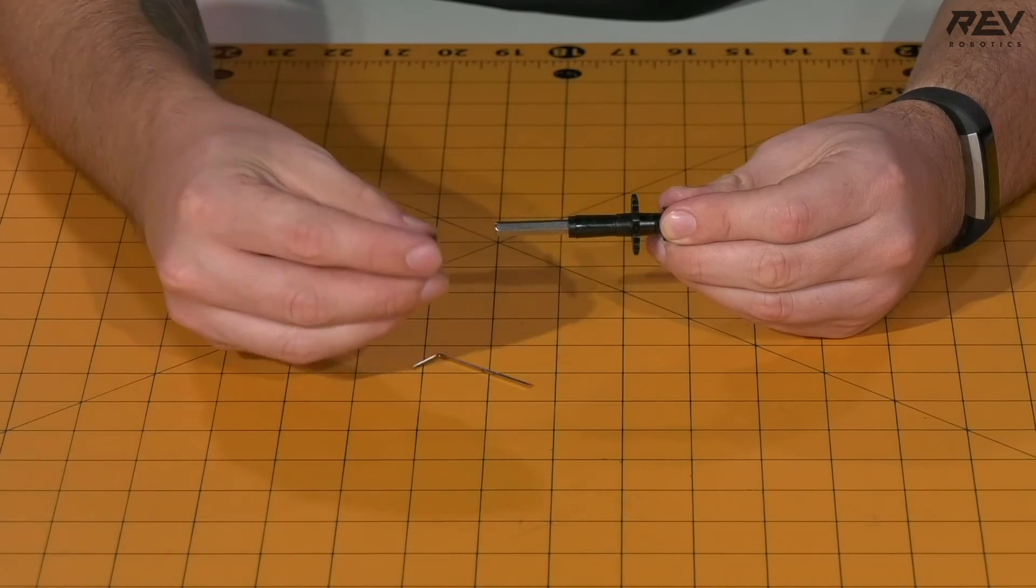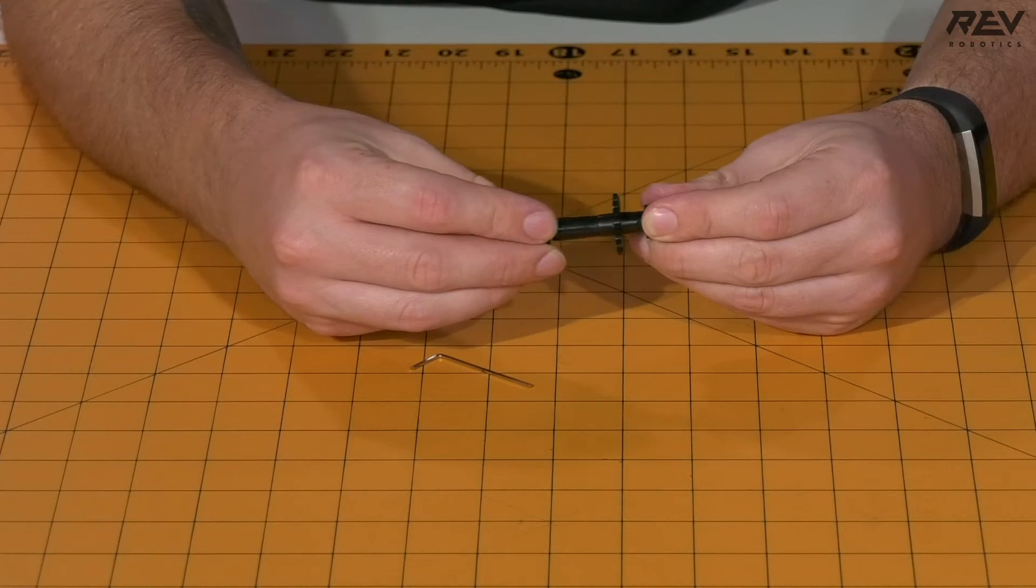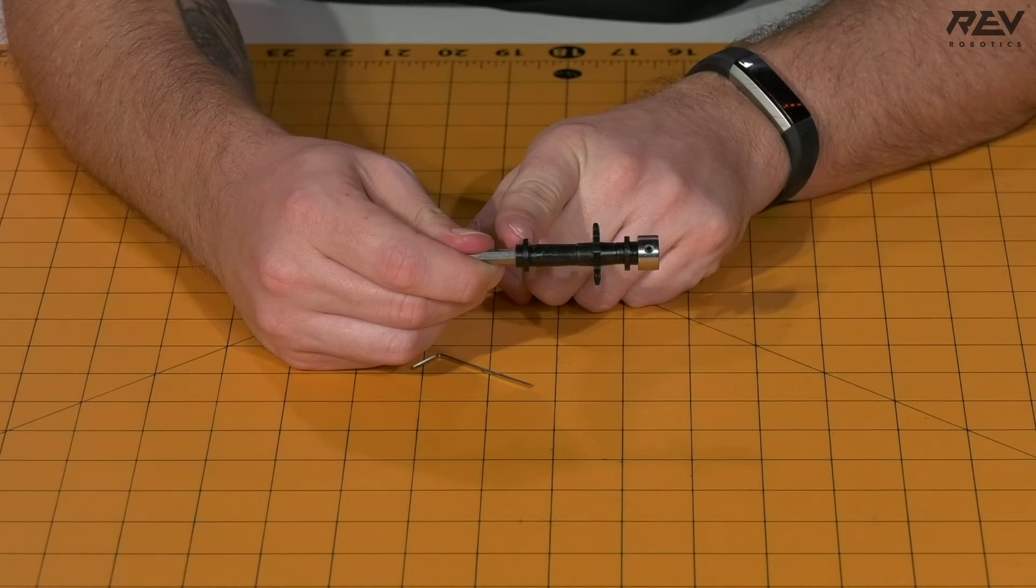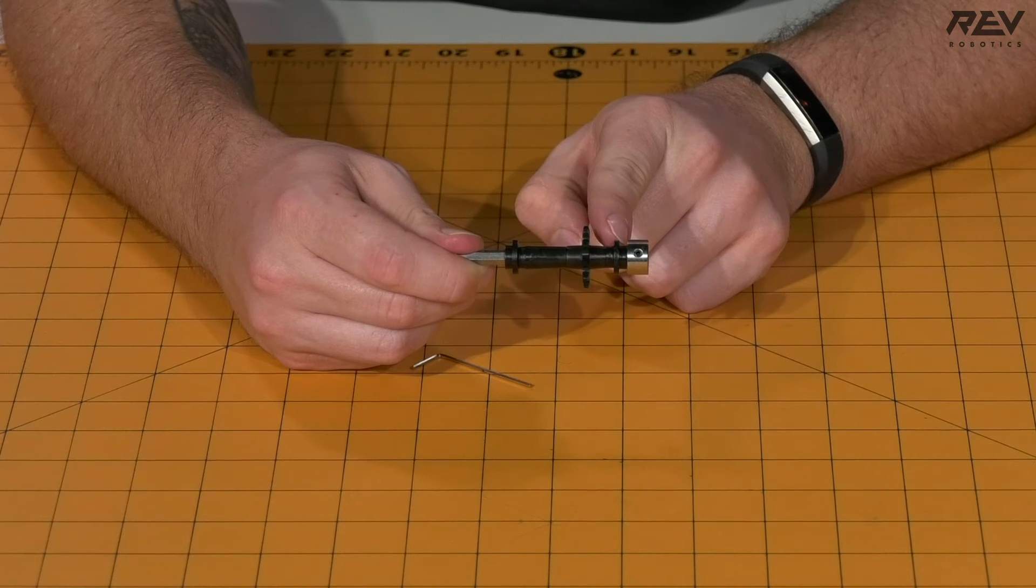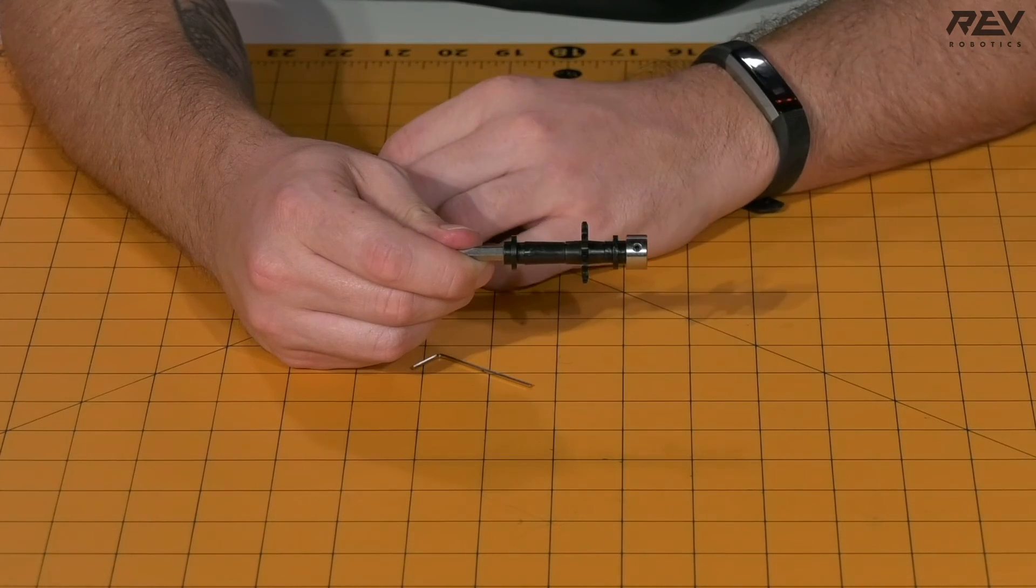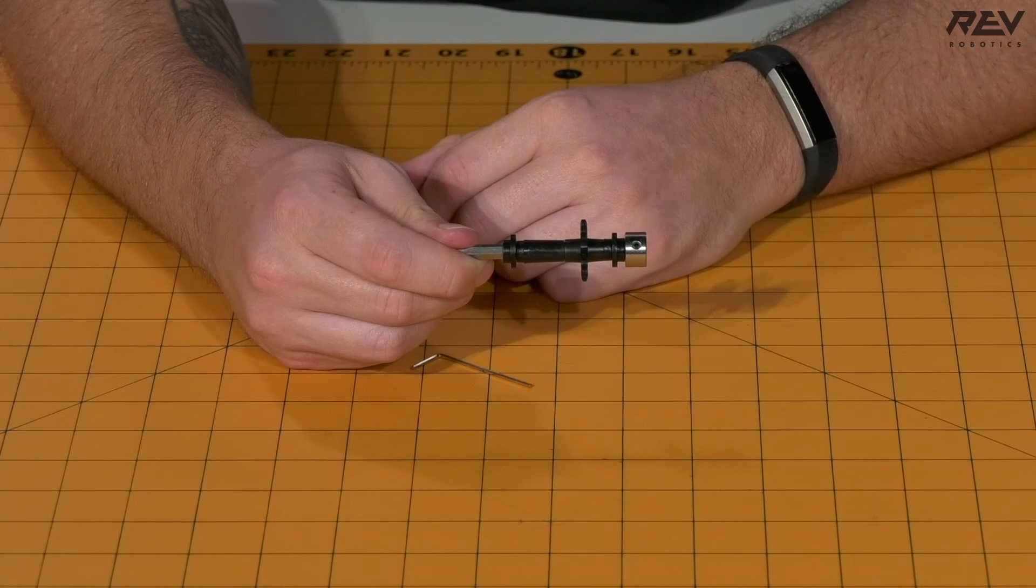The last step is to take your short through-bore bearing and slide it onto the end of the shaft as well. Note the location of the flange relative to your other flange, as this was put on in the opposite orientation. This is important for later portions of the assembly.